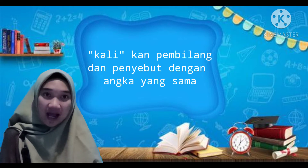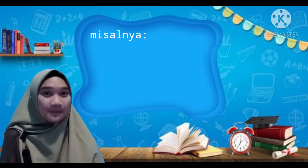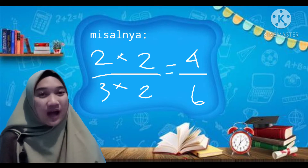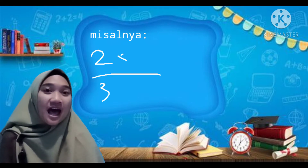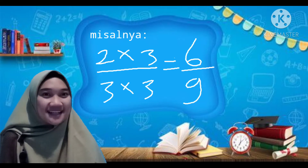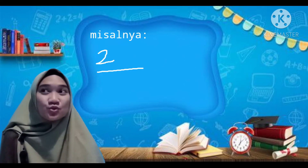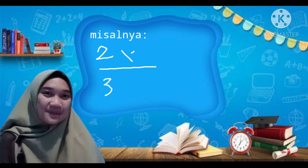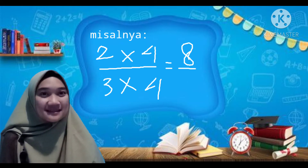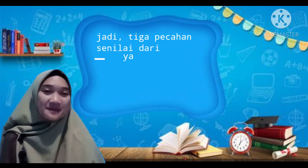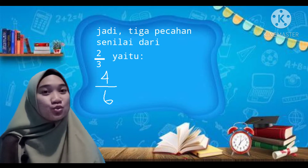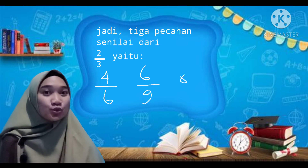Dikalikannya dengan angka yang sama. Misalnya, 2 dikali 2 sama dengan 4, per 3 dikali 2 sama dengan 6. Atau, 2 dikali 3 sama dengan 6, per 3 dikali 3 sama dengan 9. Bisa juga dengan 2 dikali 4 sama dengan 8, per 3 dikali 4 sama dengan 12. Jadi, 3 pecahan senilai dari 2 per 3 yaitu yang pertama 4 per 6, yang kedua 6 per 9, dan yang ketiga 8 per 12.